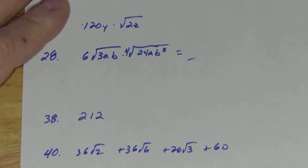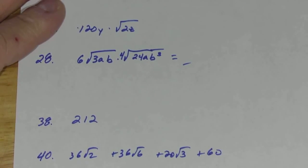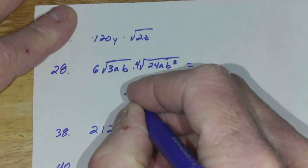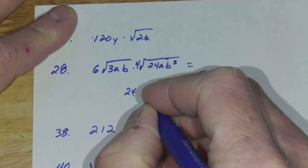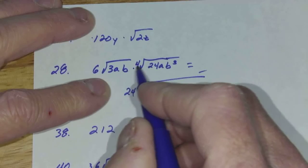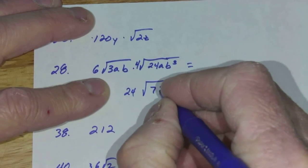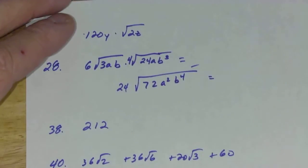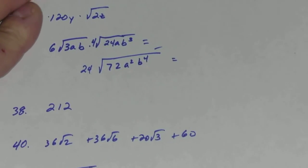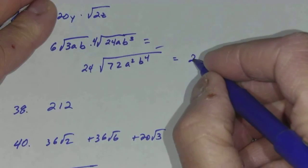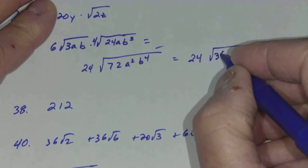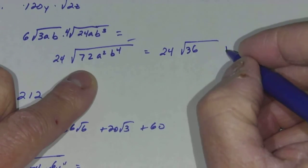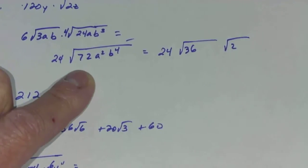So let's go ahead and combine these together. I'll do it underneath here so we can see a little bit better. 4 times 6 is 24. Square roots of 3 times 24 is 72. A to the 2nd, b to the 2nd, b to the 4th. So now we've got to cut this up into the things we know and the things we don't. 24 is outside over here so I've got 36. I know the square root of that. But I don't know the square root of 2. 36 times 2 gives me 72.